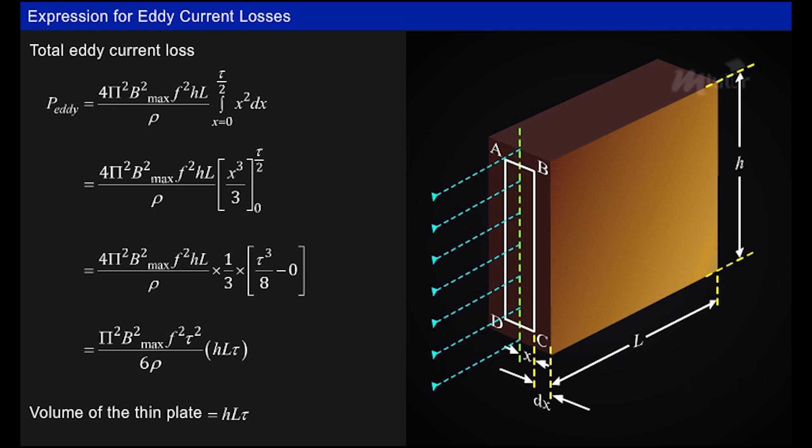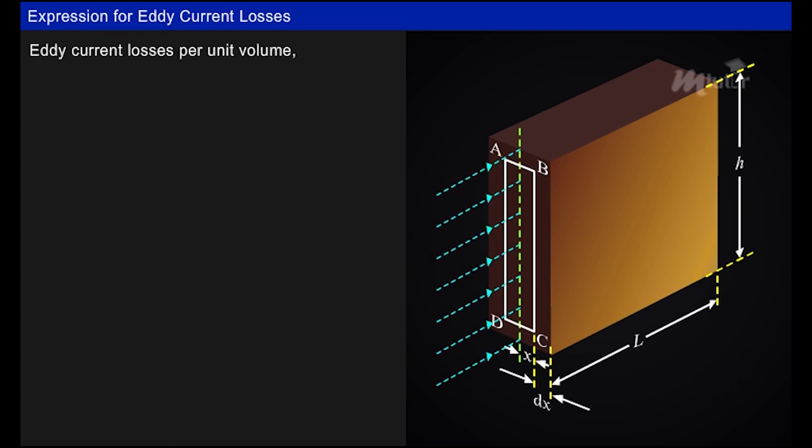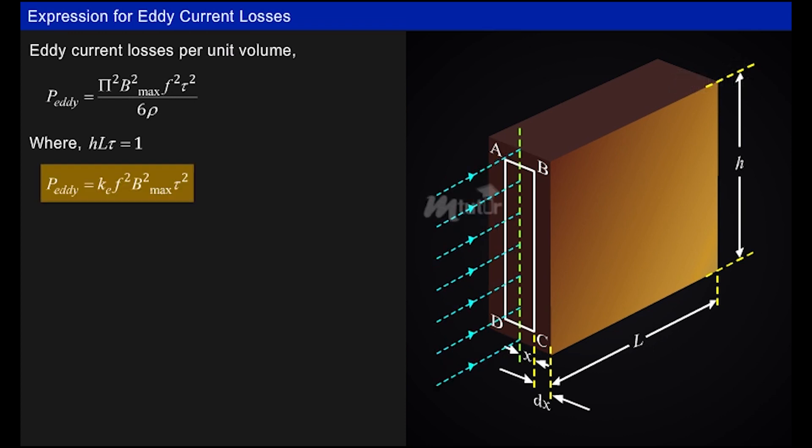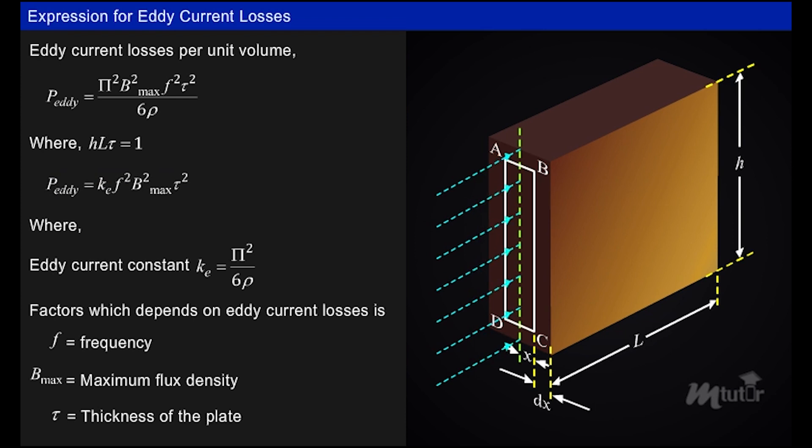Eddy current losses per unit volume is given by: Finally, the eddy current losses equation is reduced to P_eddy = K_e × f² × B_max² × τ². So the factors which affect eddy current losses are eddy current constant K_e, frequency f, maximum flux density B_max, and thickness of the plate τ, and is also inversely proportional to the resistivity of the material.